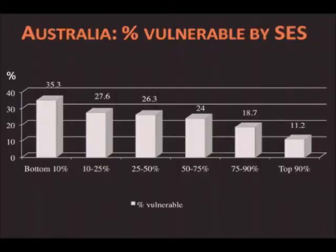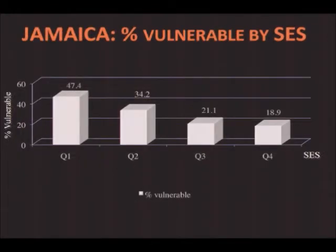When we apply the EDI and look at the fraction of children who come up vulnerable — behind where we'd like them to be on one or more scales — organized by family income level, there's our friend the gradient. In wealthy Australia, vulnerability runs from about 11% among families in the top 10% of income to about 35% among those at the bottom. Similarly, in a middle-income country like Jamaica, the same pattern emerges. The gradients appear very early in life in socially partitioned societies.